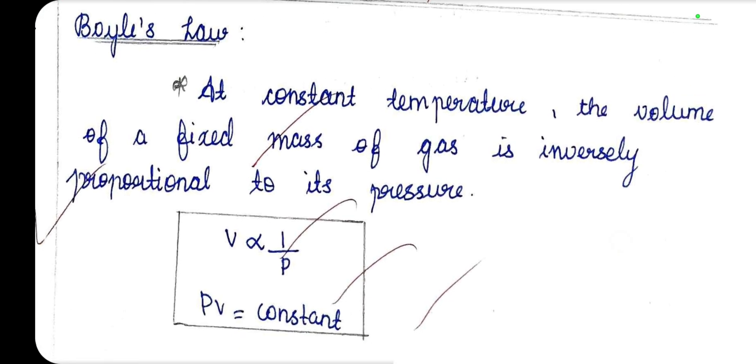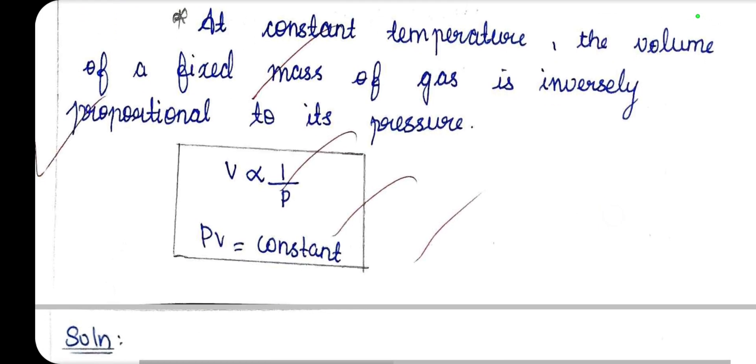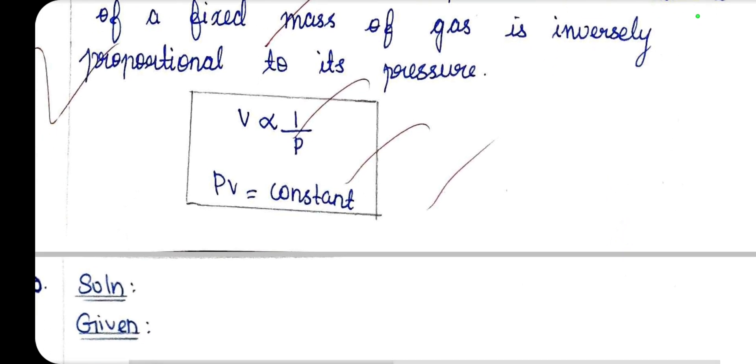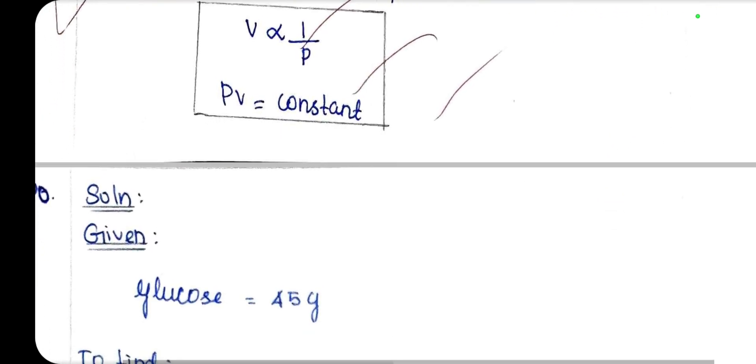Boyle's law: the volume of a gas is inversely proportional to its pressure; PV is equal to a constant.